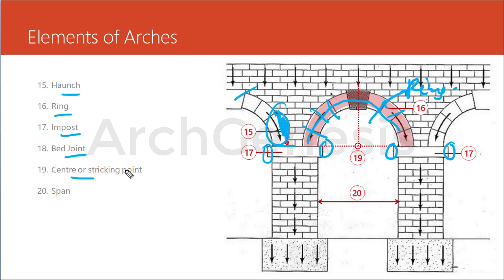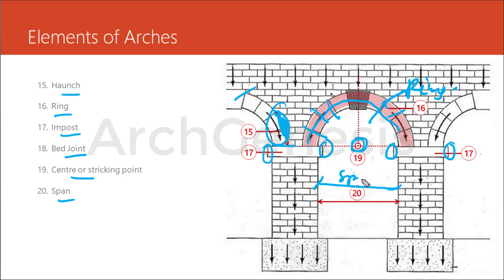The center or striking point is the geometrical center point from where the arc forms the extrados, arch rings, and intrados. Span is the clear horizontal distance between the piers.